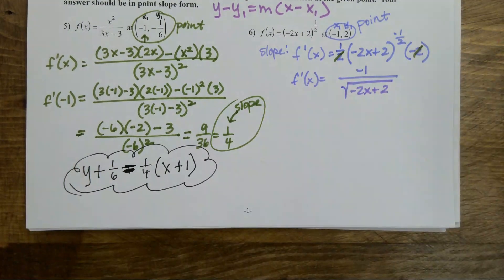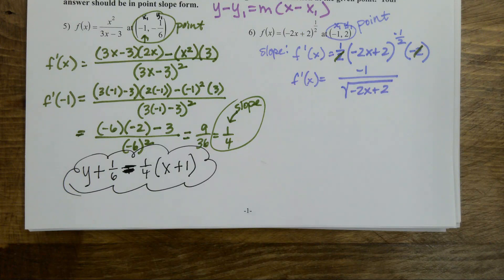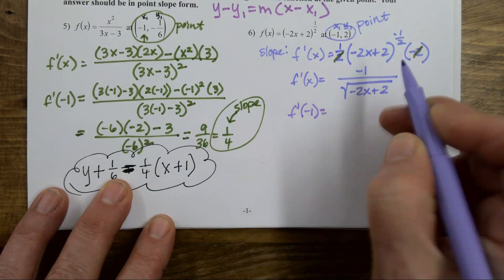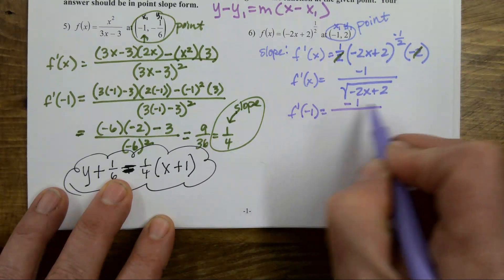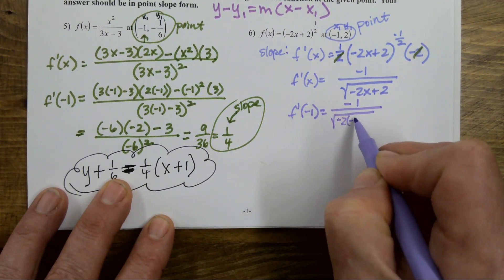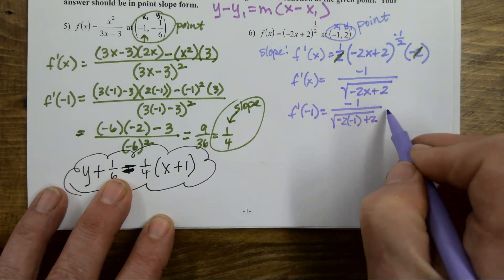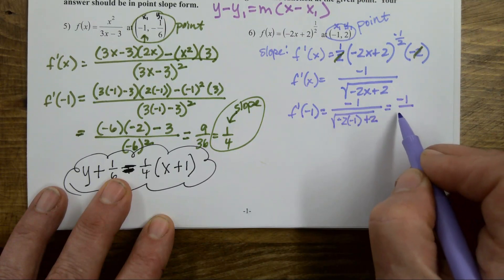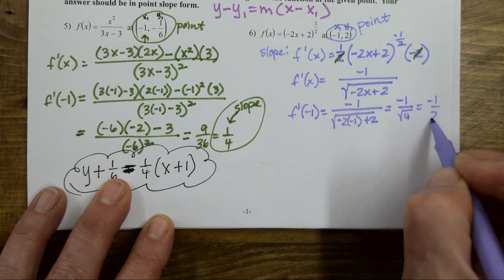So now I'll evaluate. F prime of negative one equals negative one over the square root of negative two times negative one plus two, or negative one over the square root of four, or negative one half. That wasn't so bad — there is the slope I was looking for.